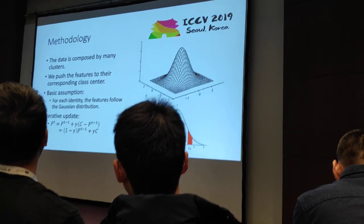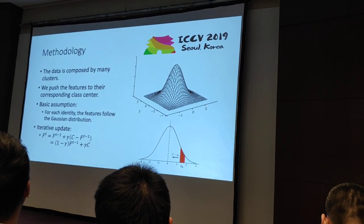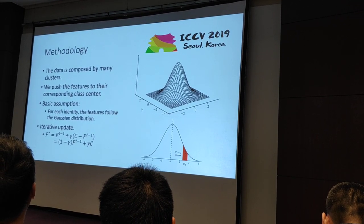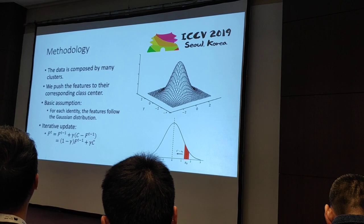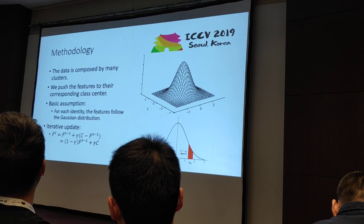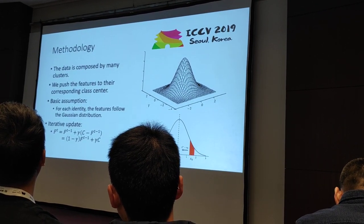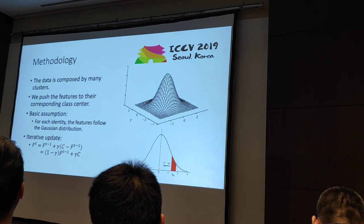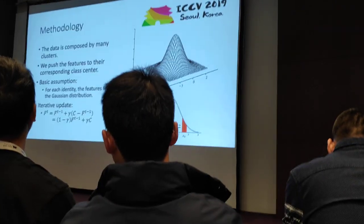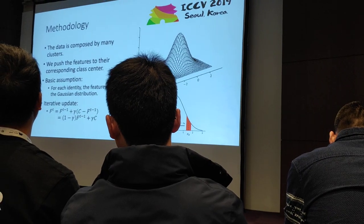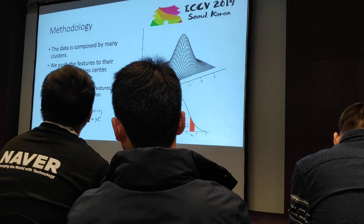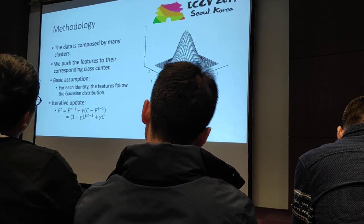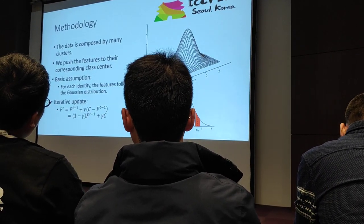The methodology is as follows. The data is composed of several classes, and each class's features form a Gaussian distribution. Our target is to push every feature to its own corresponding class center. So our basic assumption is that every class follows a Gaussian distribution, and we want to have an iterative update of the feature.